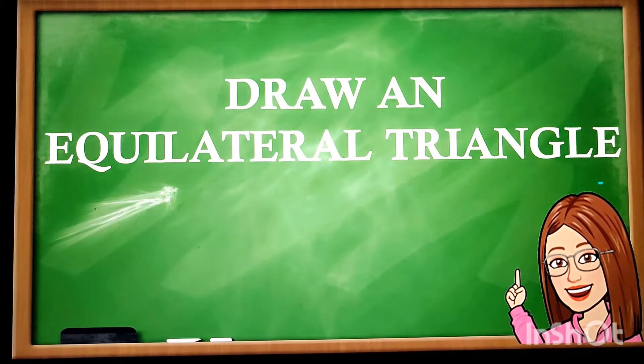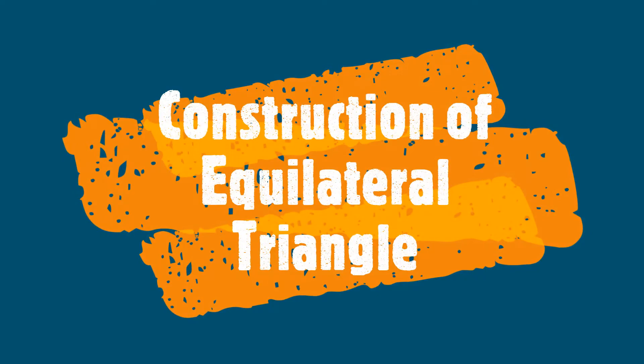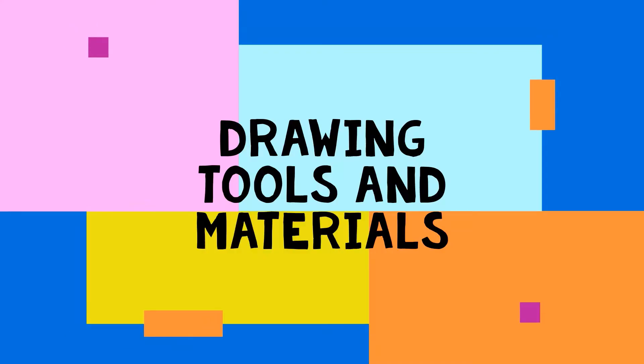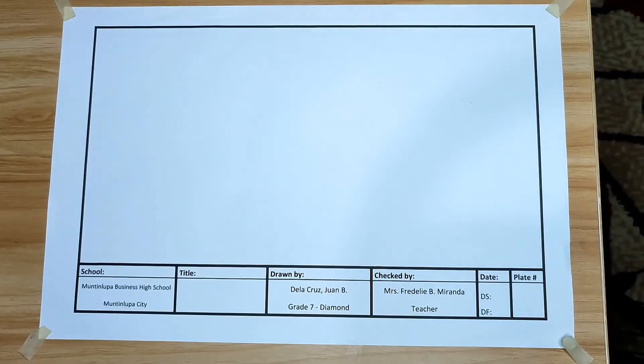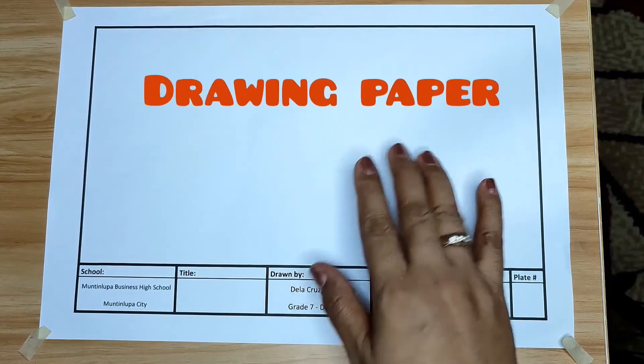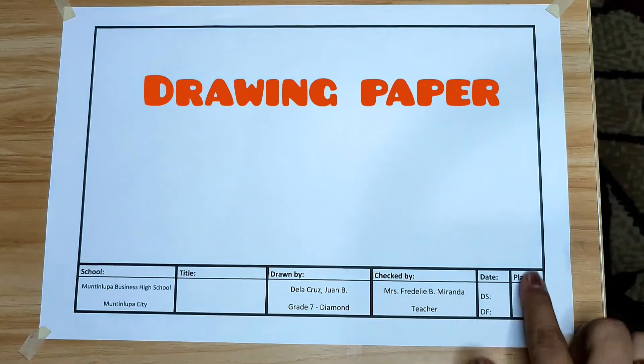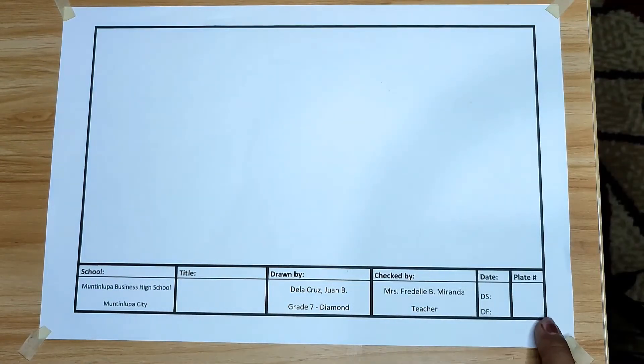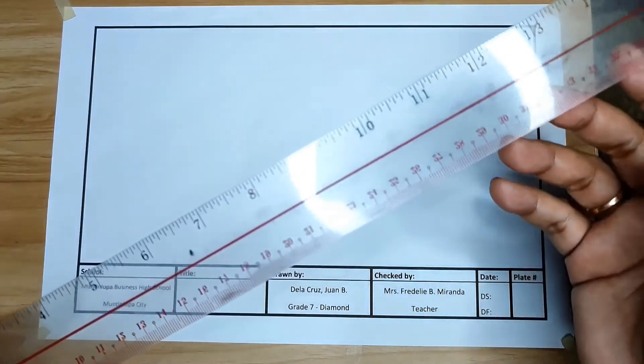Are you ready to draw an equilateral triangle? Drawing materials needed are drawing paper with borderline and title block, foot rule.